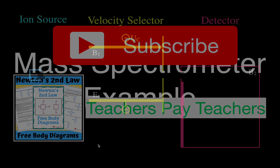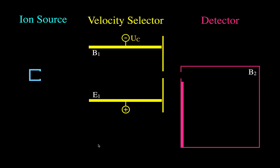Here's what we have: our ion source, our velocity selector, and our mass spectrometer or detector. We're going to go through each step in an introduction, and then we'll be calculating the velocity and calculating the mass with the detector.